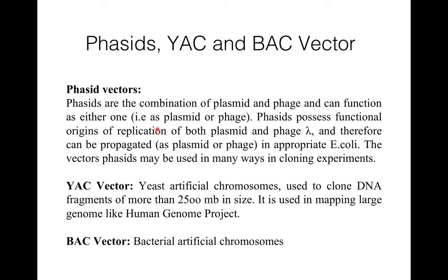Phasmids are a combination of plasmid and phage DNA, and they can function as either one — that is, as a plasmid or a phage. Phasmids possess functional origins of replication of both plasmid and phage lambda, and hence they can be propagated in an appropriate host as a plasmid or a phage. Phasmid vectors may be used in many ways in cloning experiments, as this type of plasmid vector contains a fragment of phage DNA including its att site.